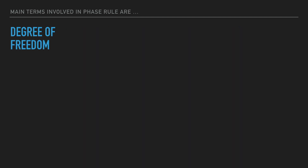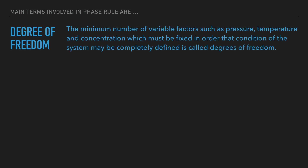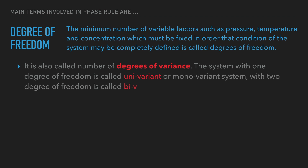The last term is degree of freedom. The minimum number of variable factors such as pressure, temperature, and concentration which must be fixed in order that the conditions of the system may be completely defined is called degree of freedom. It is also called the degree of variance. A system with one degree of freedom is called univariant or monovariant, and with two degrees of freedom it is called bivariant.